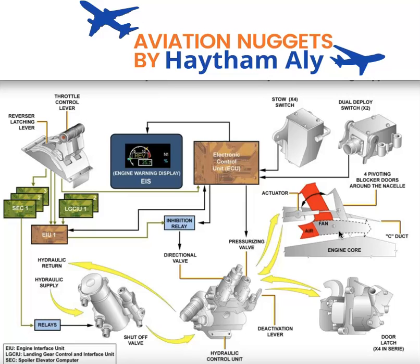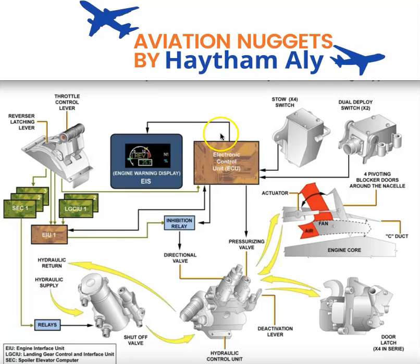Thrust reverser system operation must happen on ground only. We have three lines of defense in order to ensure operation only on ground, and they must all agree together. The computers for the three lines of defense are: the Electronic Control Unit (ECU), which is the engine computer; the Engine Interface Unit (EIU); and the Spoiler Elevator Computer (SEC). The ECU manages the primary line of defense, the EIU the secondary, and the SEC the third.